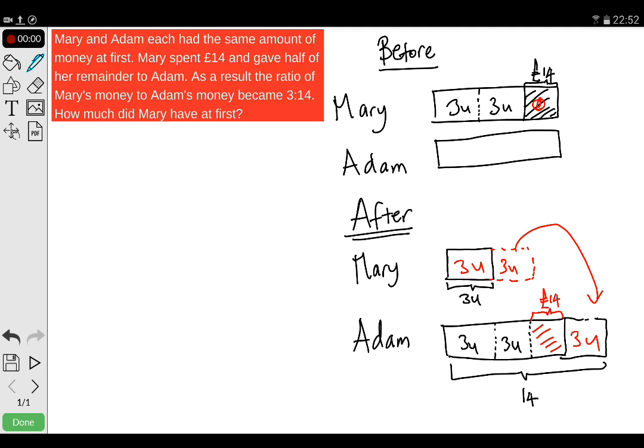This is 3 units, so for Adam's case here, he's got 3 units plus 3 units plus another 3 units—9 units—plus the 14 pounds. He's got 9 units plus 14 pounds after something happened. Therefore, these 9 units plus 14 pounds is equal to 14 units altogether.